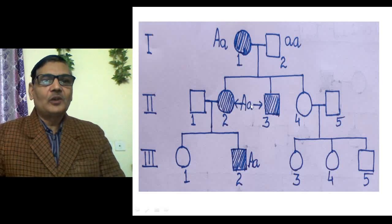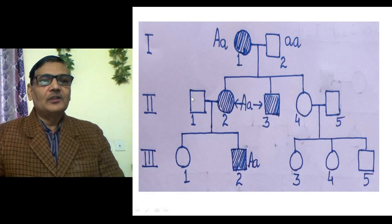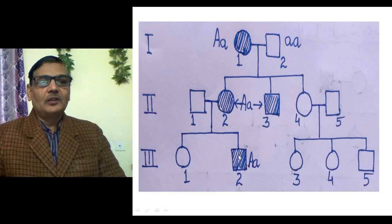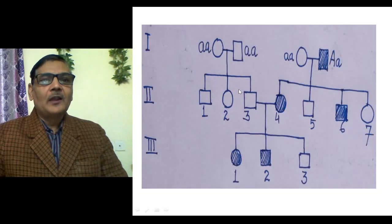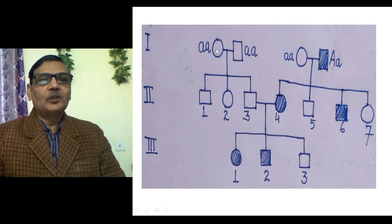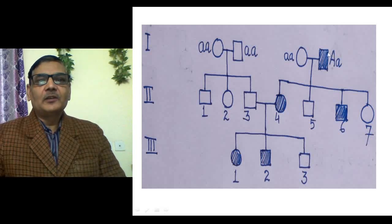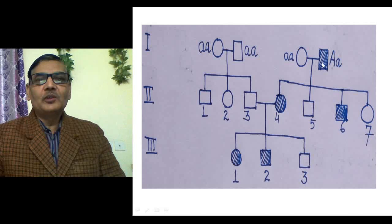That normal fellow gets married to a normal person and they have all children showing the normal trait. Two important points are clear: the disease gets expressed in both sexes equally, and if someone is showing the trait, then definitely one of their parents will also be showing the trait. In another pedigree, a wife and husband who are both normal have normal children, since there is no dominant allele and no expression of the disease in the family.